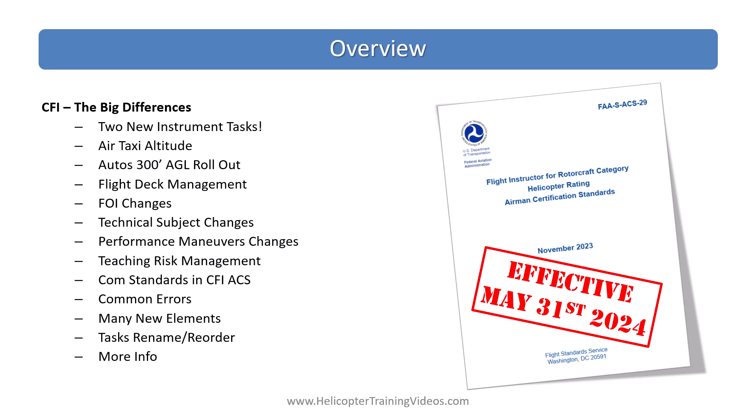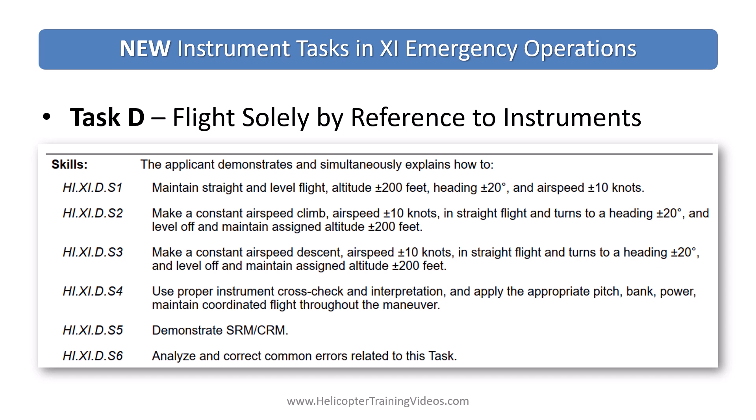This is probably one of the biggest changes across all four new ACS documents. It's also in the commercial ACS where it is a required task; here it's an optional task. We're now talking about doing hood work or simulated instrument work in the helicopter for your CFI ride — potentially. This particular task involves maintaining straight and level flight within 200 feet, heading within 20 degrees, and airspeed within 10 knots, and then making constant airspeed climbs and descents and turns to the same standards, while talking through and teaching this and discussing common errors and how to fix them.